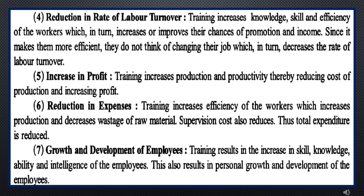Reduction in Expenses. Training increases efficiency of the workers, which increases production and decreases wastage of raw material. Supervision cost also reduces, and thus total expenditure is reduced. Training increases the production and productivity of employees, reducing time wastage, raw material wastage, and other wastage. It reduces the cost of production, supervision charges, and thus total expenditure is reduced.